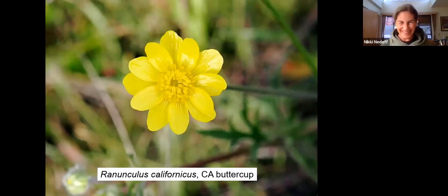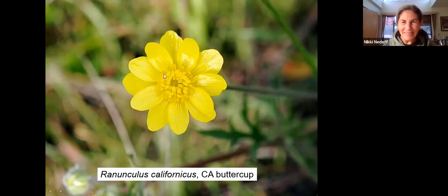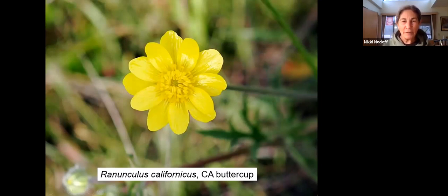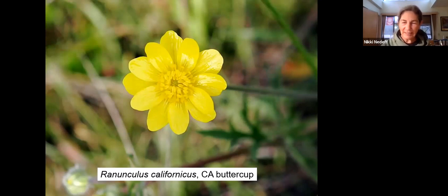Another yellow one: California Buttercup, with lots and lots of stamens. It really likes moister soils, which is typical of the family, the Ranunculaceae. Ranunculus — California Buttercup — is the most distinctive member of that family.